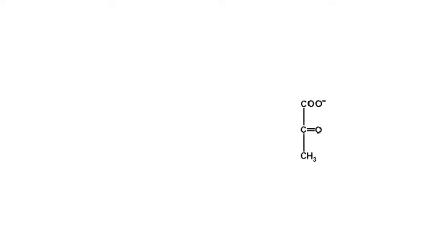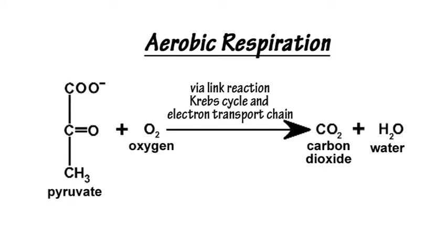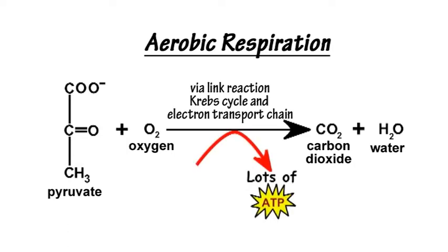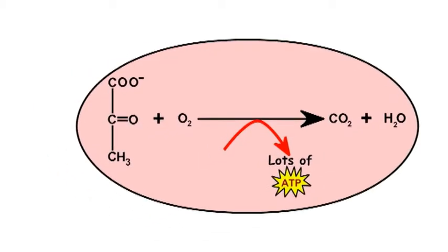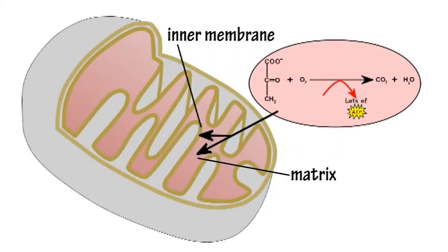In the second stage of respiration, which requires oxygen — known as aerobic respiration — pyruvate and oxygen are broken down into carbon dioxide and water, with the energy released along the way being used to produce many more molecules of ATP. This takes place in the mitochondria of the cell.